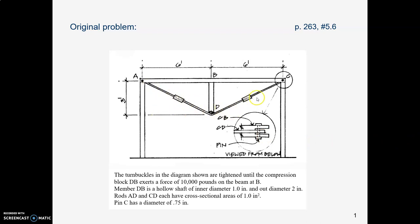We have two rods. There's a turnbuckle on each rod and it tightens each rod until this pipe BD is compressed with a force of 10,000 pounds. And he tells us that DB has an inside diameter of 1 in. and an outside diameter of 2 in. These rods that are being pulled on have an area of 1 square inch each. And then there's a pin at the corner. It has a diameter of 0.75 in. So that's the original thing.